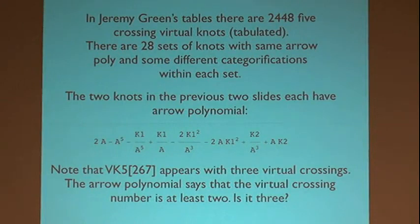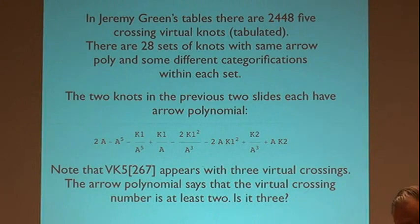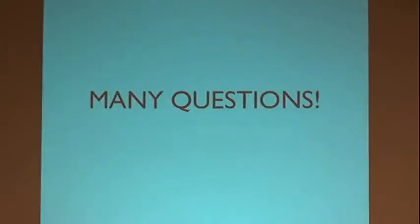To summarize: the simplest categorification of the arrow polynomial, where you keep track of the number of zigzags in a state modulo 2 and use it to get a better boundary, does give information about virtual knots and the arrow polynomial. There are lots of open questions about this situation.